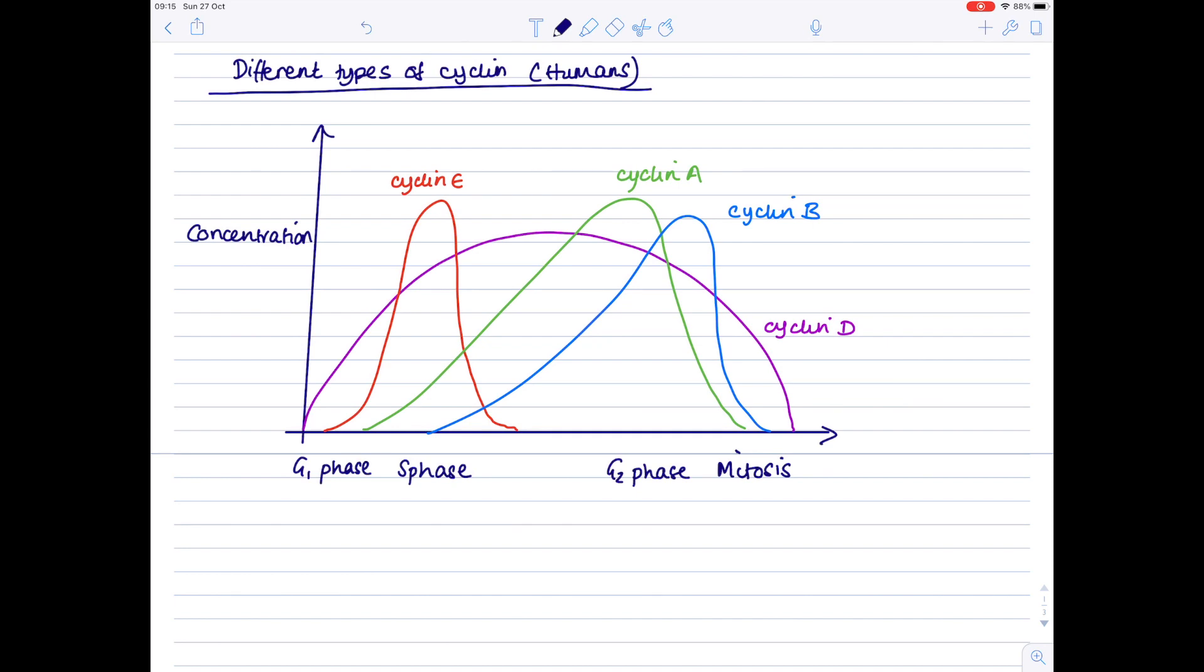In the G1 phase of interphase we can see that cyclin D is building up. In the S phase, cyclin E reaches a maximum. In the G2 phase, cyclin A reaches a maximum, and then lastly with cyclin B, we know that mitosis will occur.